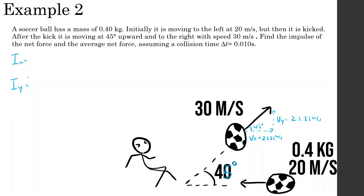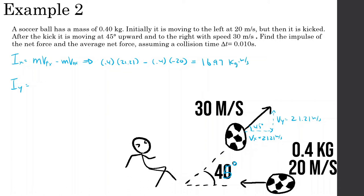For the impulse in the x direction: mass times velocity final in x minus mass times velocity initial in x. The mass is 0.4, velocity final in x is 21.21, and the initial velocity in x is negative 20 (moving to the left). So we get 0.4 times 21.21 plus 0.4 times 20, which equals approximately 16.97 kilogram·meters per second.